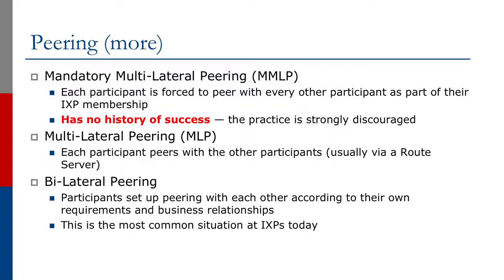We have seen earlier about the different types of peering. We have mandatory multilateral peering, known as MMLP, where each participant is forced to peer with every other participant as part of the membership. This has no history of success, and the practice is strongly discouraged. There may be a couple of instances worldwide where MMLP works, out of the hundreds of exchange points in operation today.